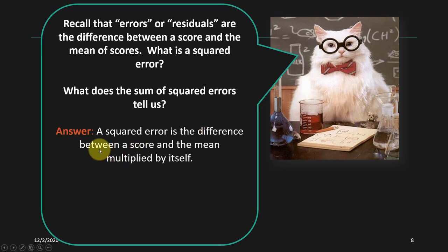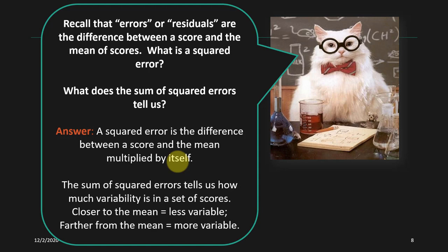A squared error is the difference between the score and the mean multiplied by itself. Conceptually, the sum of squared errors tells us how much variability there is in a set of scores. If all the scores tend to be closer to the mean, the sum of squared errors will be smaller, indicating the data are less variable. If they're farther from the mean, the sum of squared errors will be larger, indicating the data are more variable. One downside is that there are no natural units — whether 2,492 is big or small depends on how many scores there are and the units of those scores.